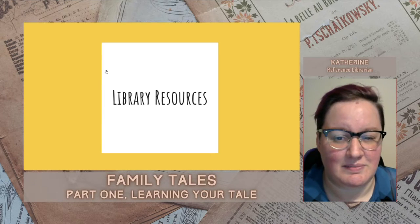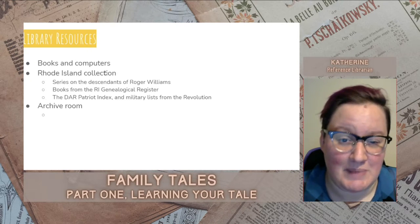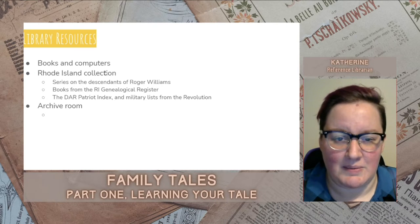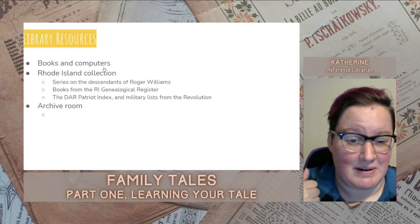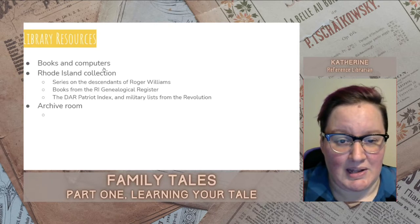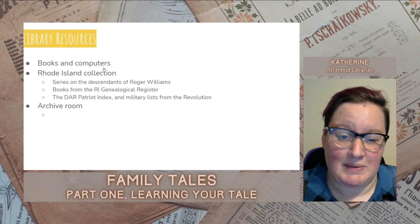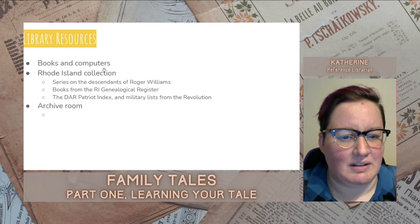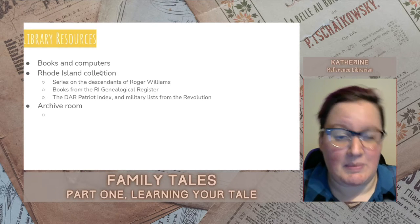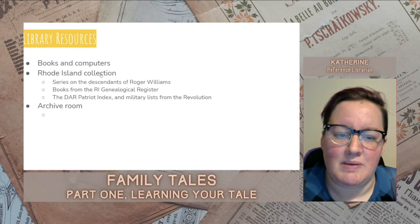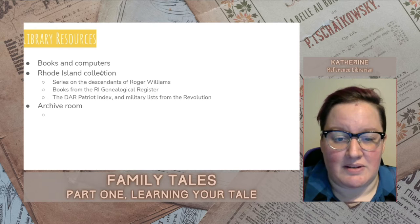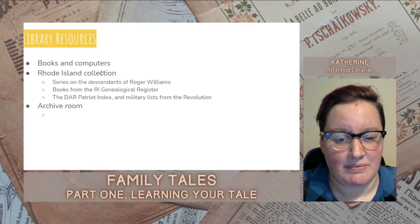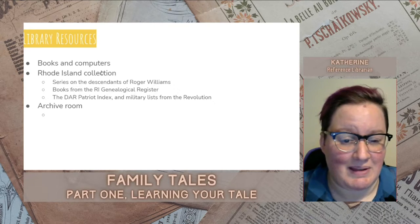Which brings us to library resources. We have a lot of resources. To start with the basics, we've got history books and computers — you can come here to get your research done if you don't have access at home. At the next level, we have our Rhode Island collection — the books locked up in the back of the reference room. Some of our best genealogy resources are the genealogy books about important local families, including a series on Roger Williams' descendants and lists of people who served in the military during the early years of the country. Beyond that, we have the archive room — a locked, climate-controlled room full of documents from the history of Situate. We have genealogy files based on family, old maps and directories, lots of information about the reservoir, and ephemera about people who have lived in this town over time. If you're interested, you can make an appointment and I will help you figure out what you need.